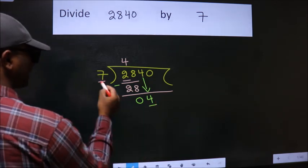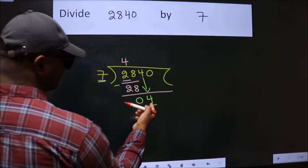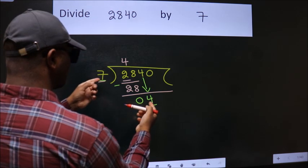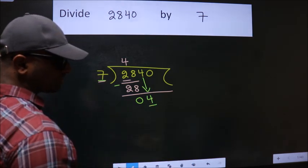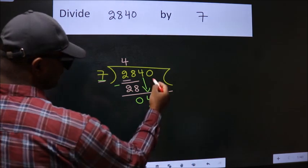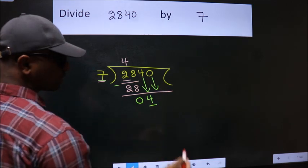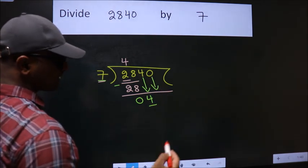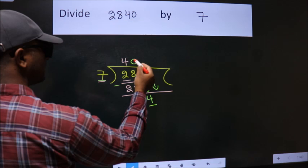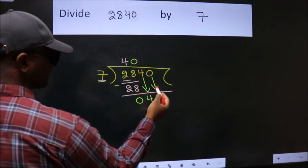Here we have 4. Here 7. 4 is smaller than 7, so we should bring down the second number. And the rule to bring down the second number is put 0 here. Then only we can bring down this number.